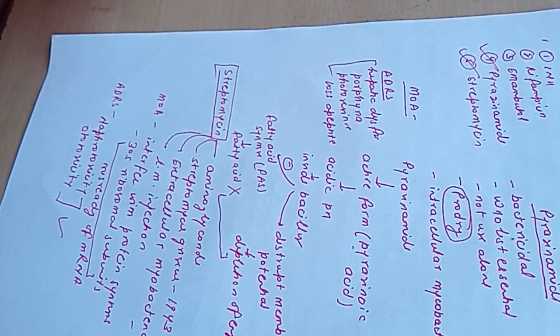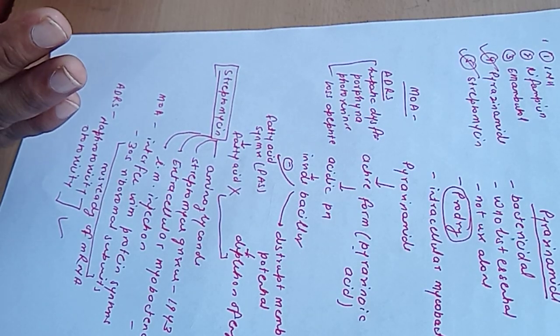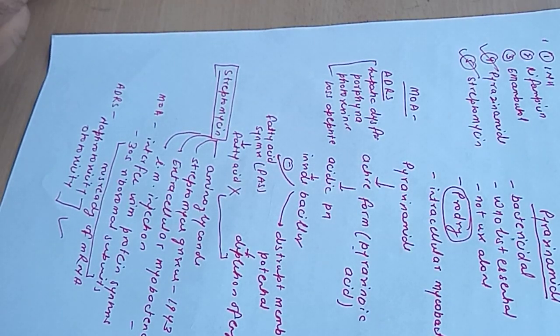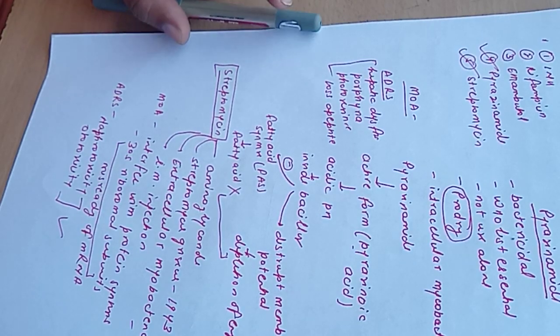This is all about the first line agents used in the treatment of tuberculosis. I have covered isoniazid, rifampicin, ethambutol, pyrazinamide, and streptomycin. In the next video, I will discuss second line agents in the treatment of tuberculosis. Thank you.